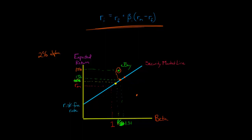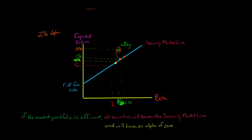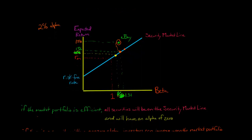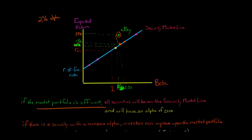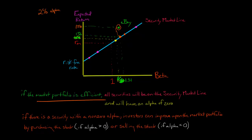Conversely, we could have some stock where the return is lower — where the return should be on the security market line but it's not. It's off the security market line. The distance between the point and where it should be on the security market line is the alpha. If the market portfolio is efficient, then all securities will be at some point along the security market line. However, if some are off the security market line, those are the stocks that have a non-zero alpha.